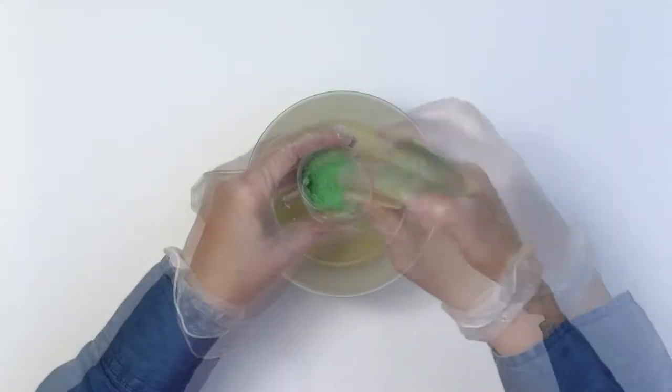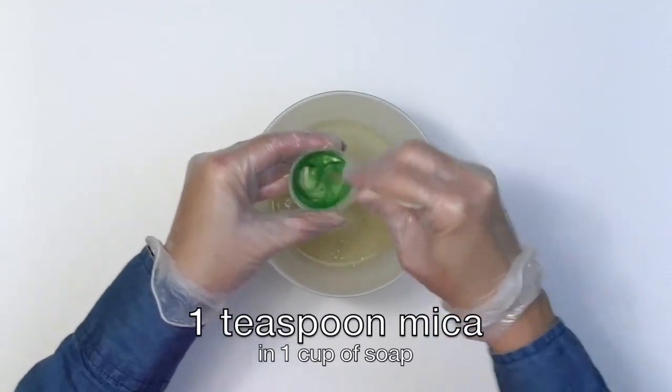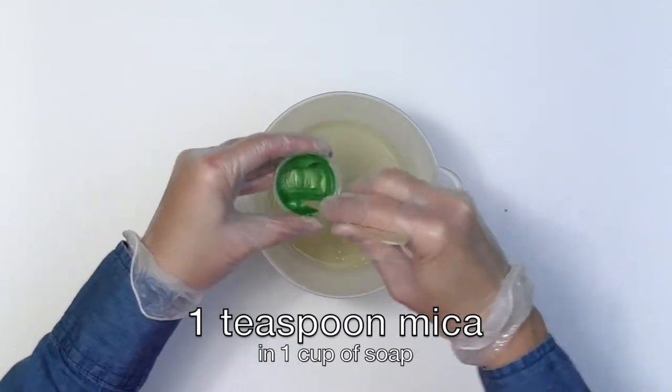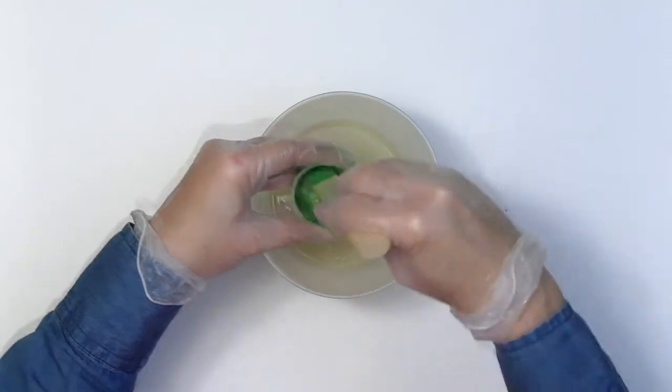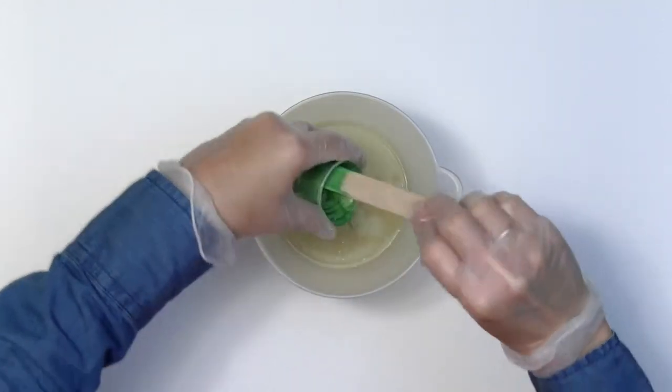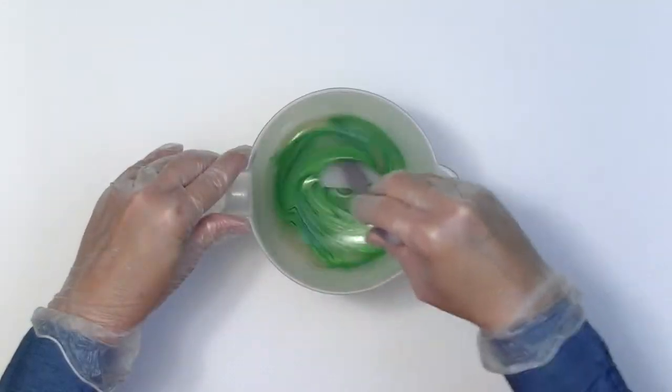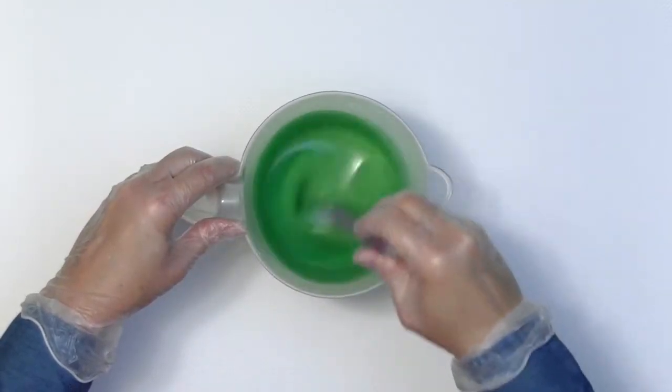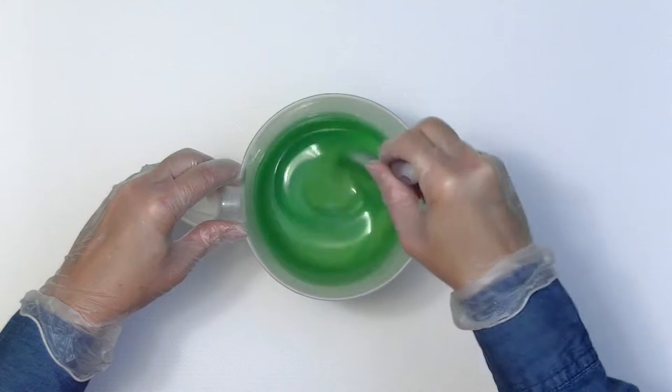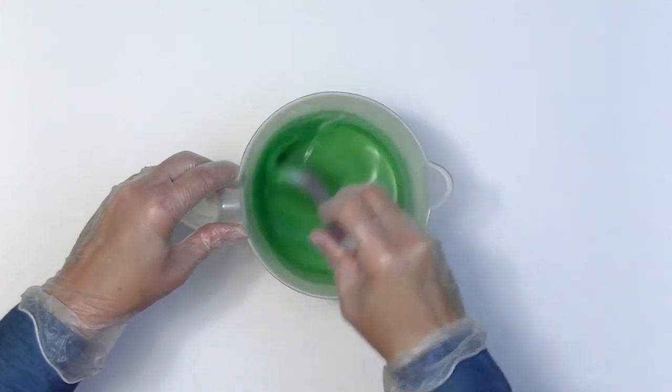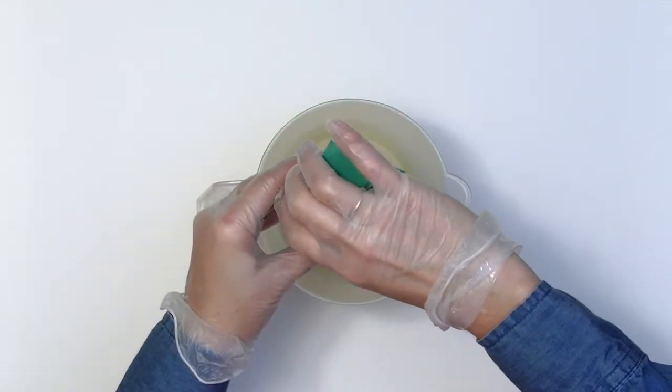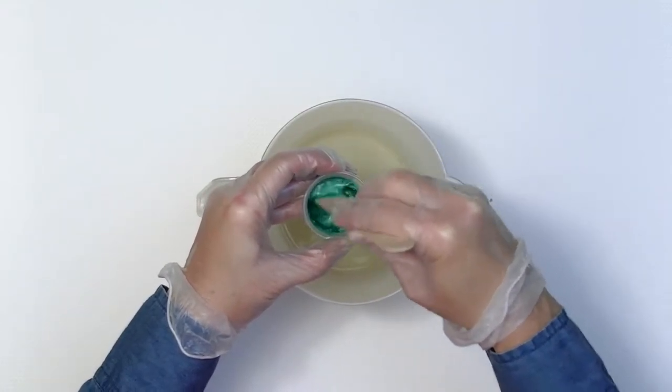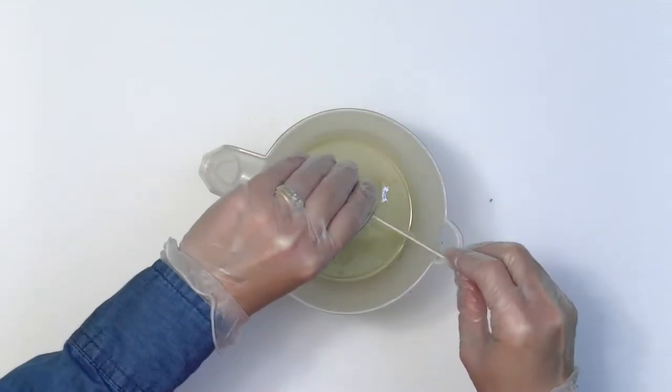Then I'll use one teaspoon of Apple Green mica in one cup of soap. This is Fruit Green mica, which looks darker when it's mixing but it lightens back up as it saponifies.